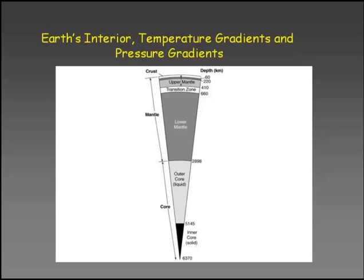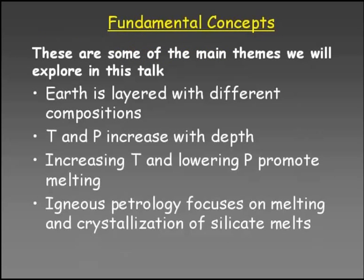We have the solid inner core, then the outer liquid core, then the lower mantle. Within the mantle again you divide upper mantle and lower mantle, with a transition zone. These are the depths at which the boundaries are marked. Earth is layered with different compositions. When you start moving from the surface of the Earth toward the interior, you find there is an increase in temperature - if you go down to a depth of one kilometer, the temperature increases by the order of 35 degrees centigrade.